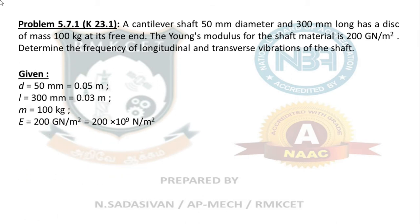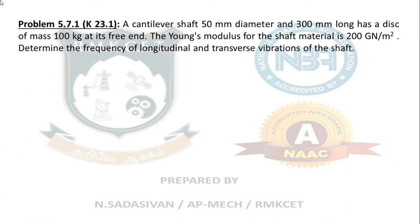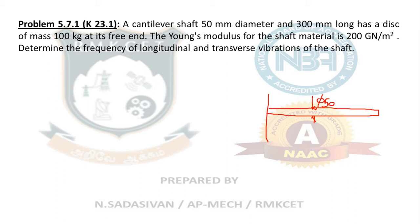We will have the diagram here. There is a cantilever beam. The diameter of the shaft is 50 mm, and the length is 300 mm. It has a disc of mass 100 kg at its free end, so the load here is 100 kg.